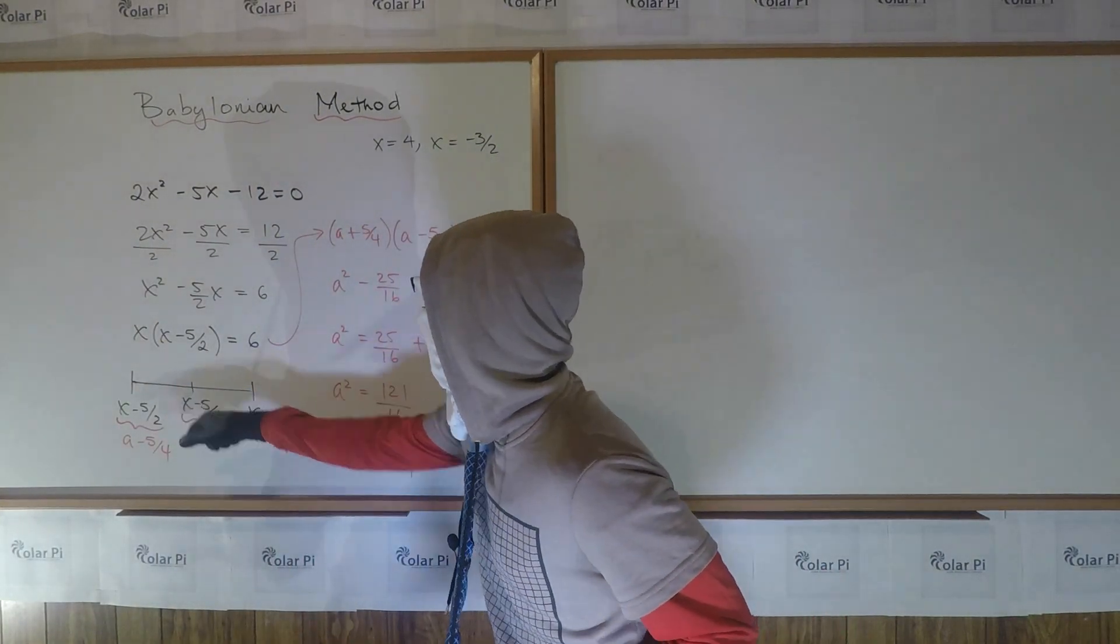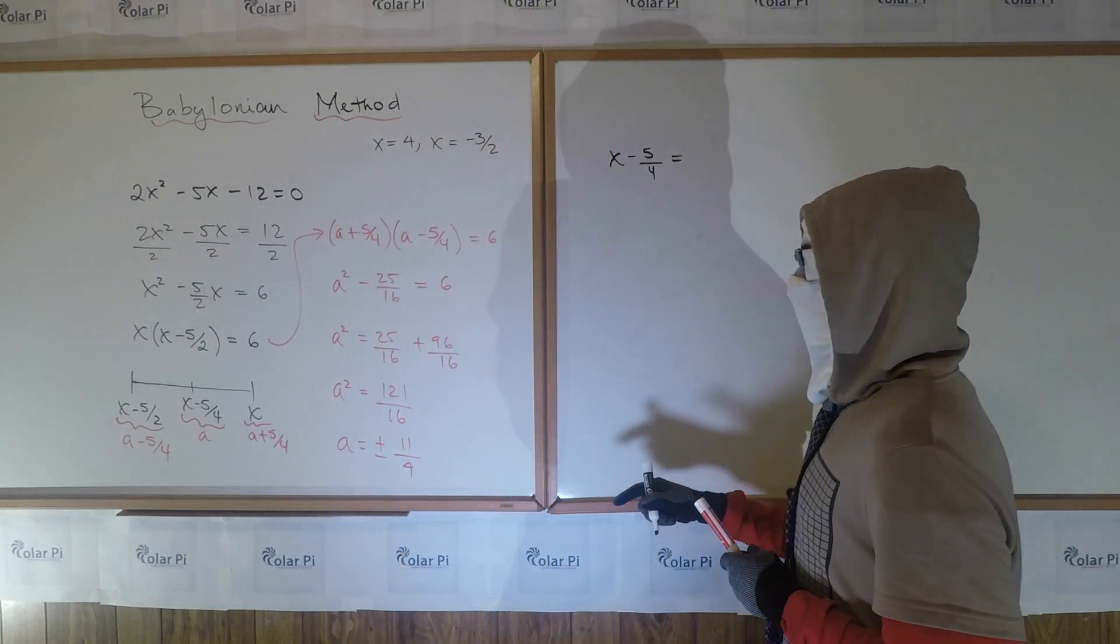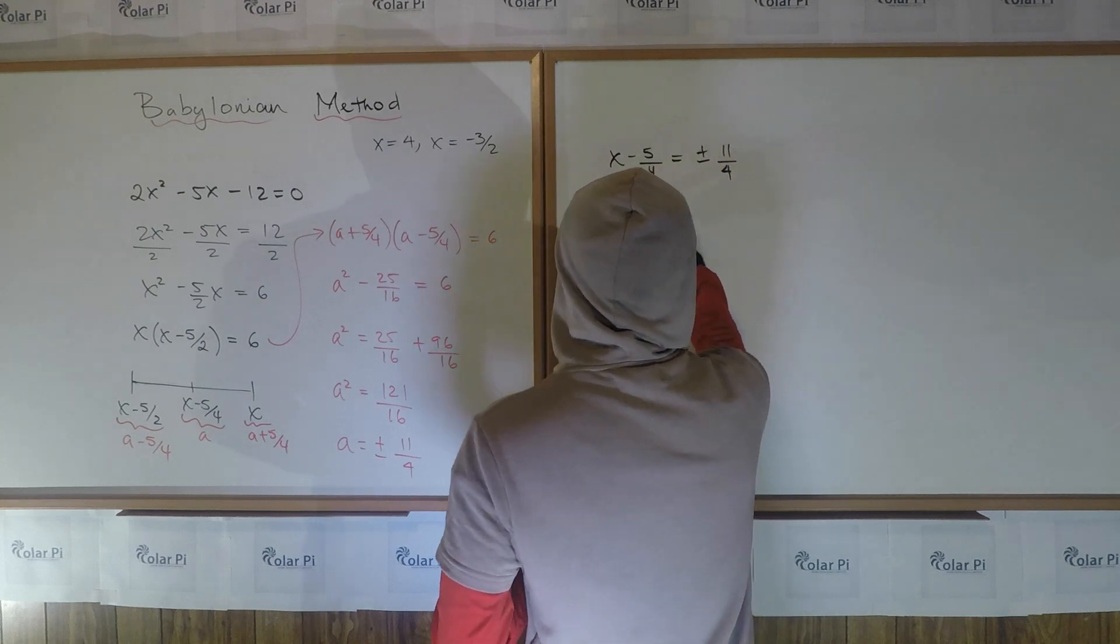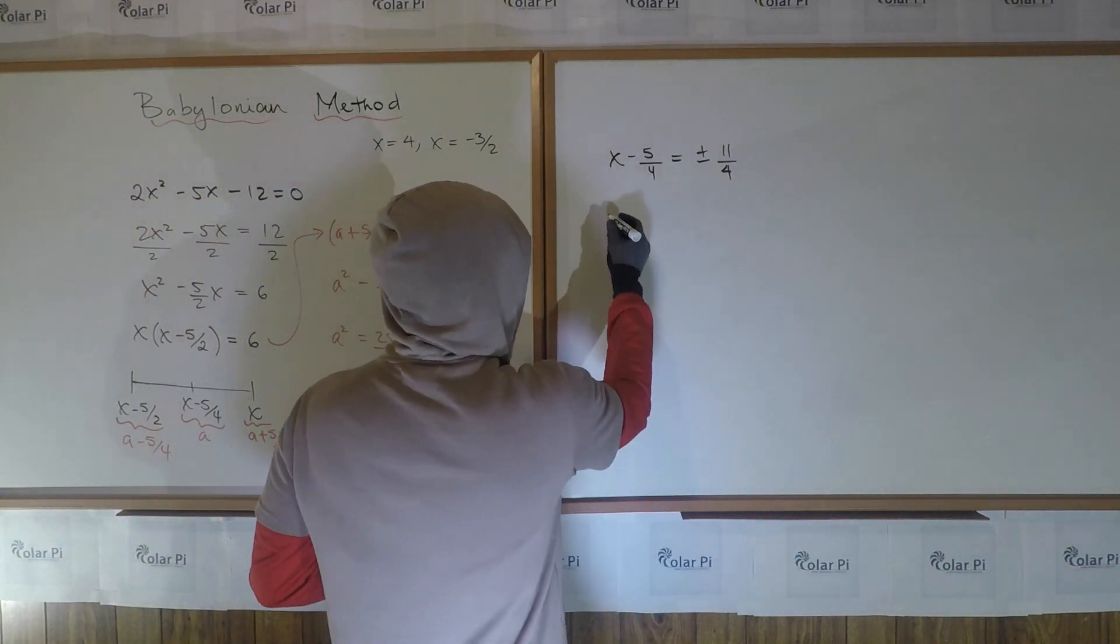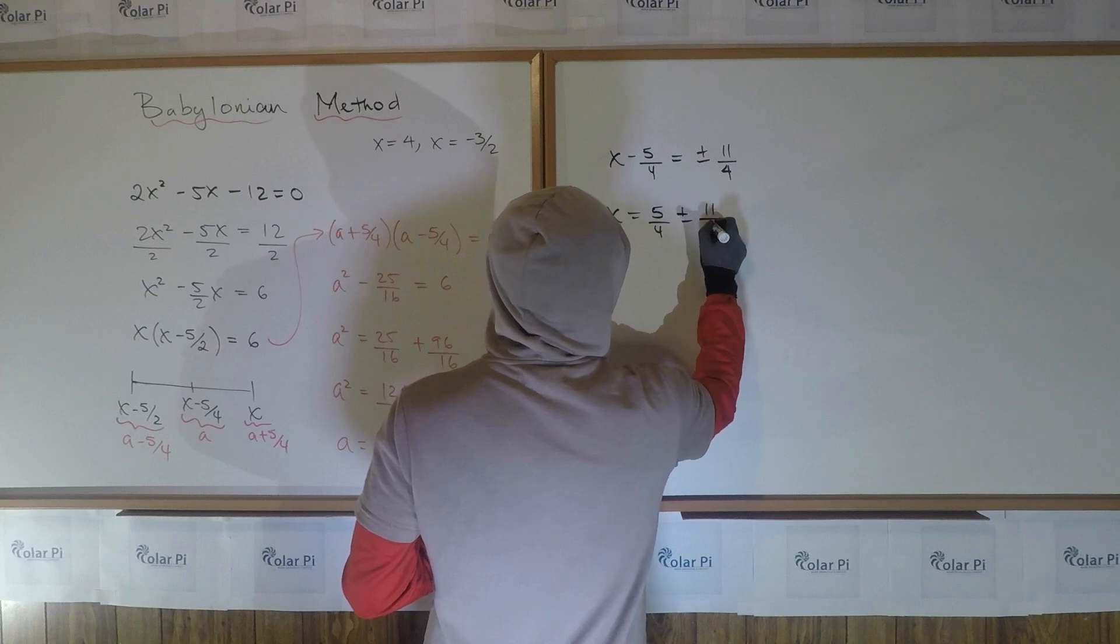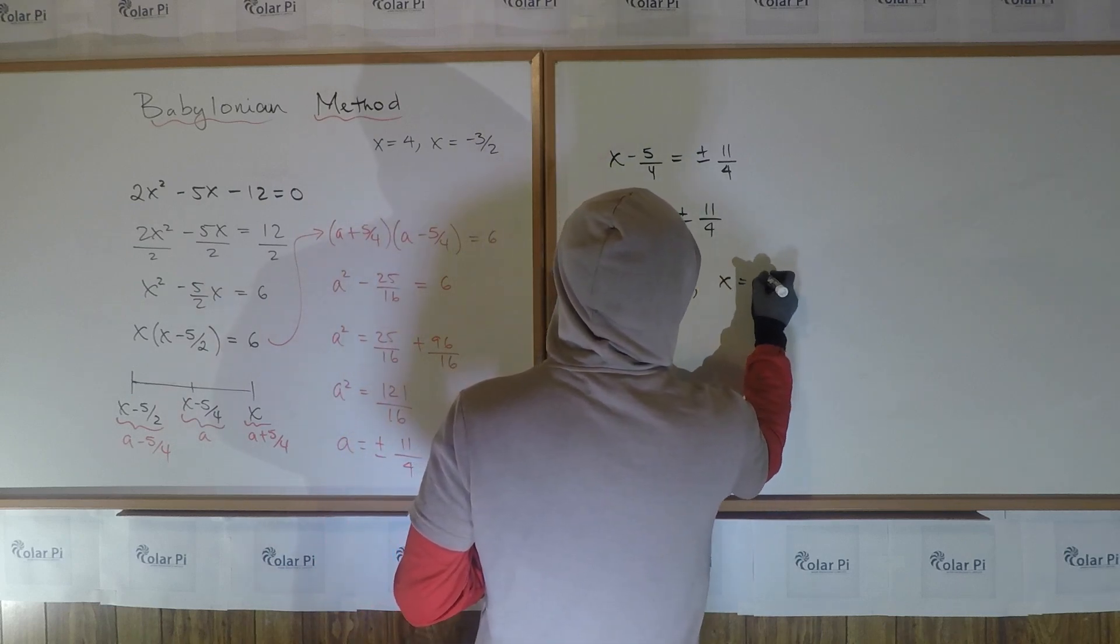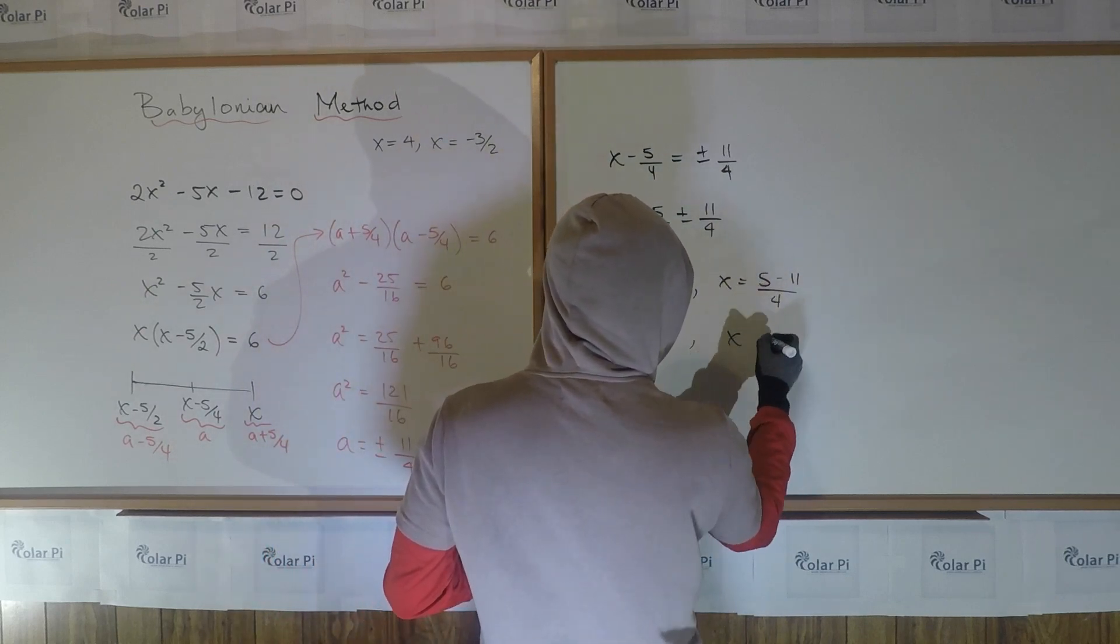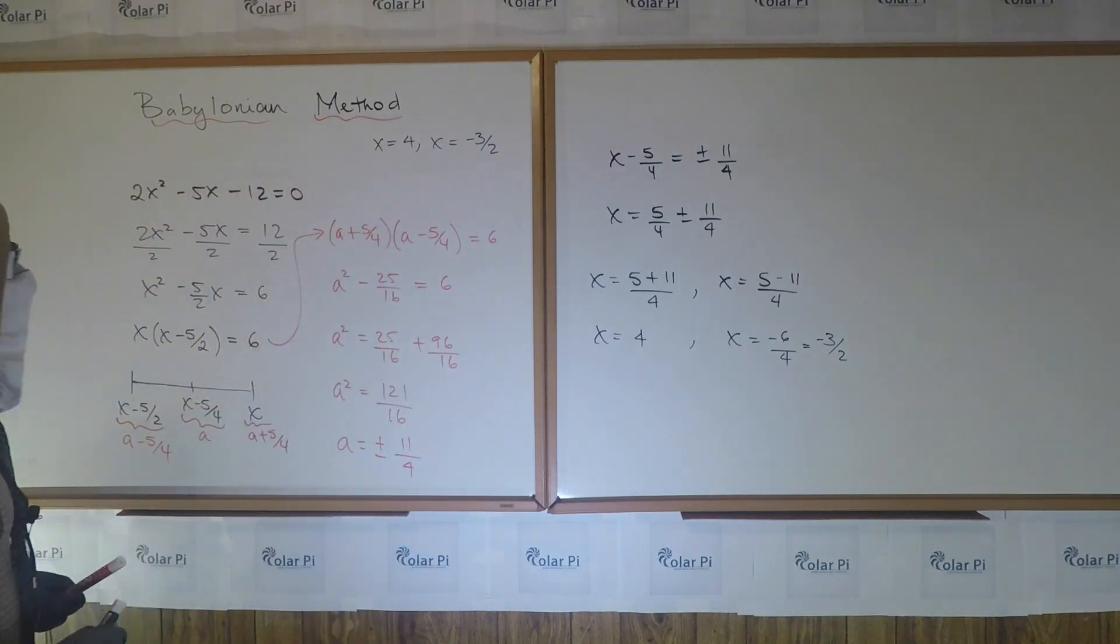But a is x - 5/4. So we go x - 5/4 = ±11/4. And notice we get common denominators at this step. And that happened earlier. That's a convenience that's automatic from the Babylonian method. And obviously, then, x from here has got to be 5/4 ± 11/4. Meaning x is (5 + 11)/4 and x is (5 - 11)/4. This says x is 16/4 or 4. And this says x is -6/4, which is -3/2, as we found using the other method.